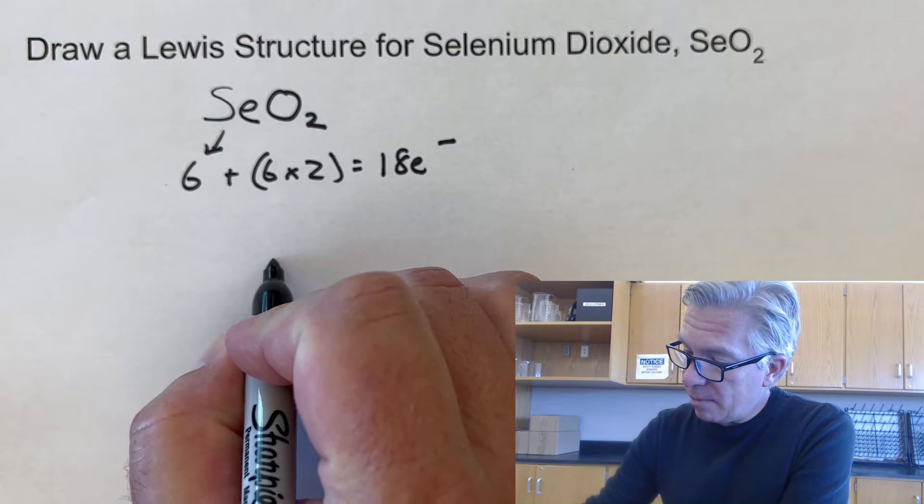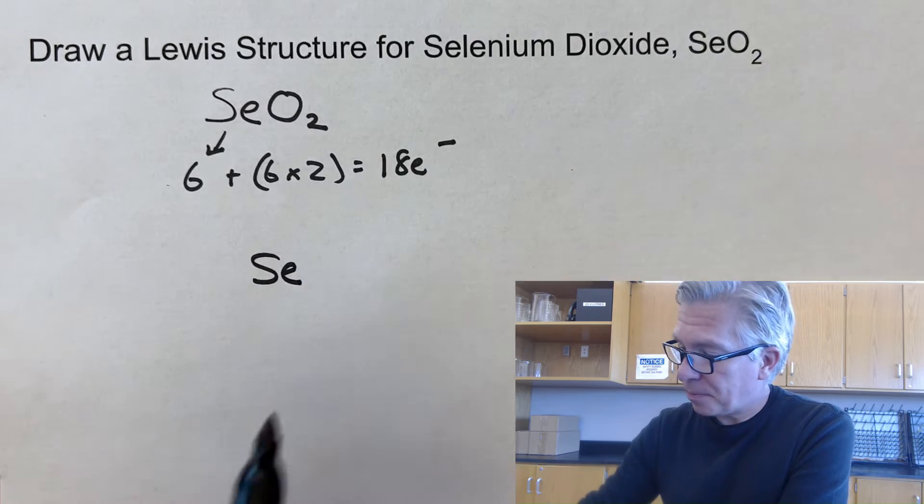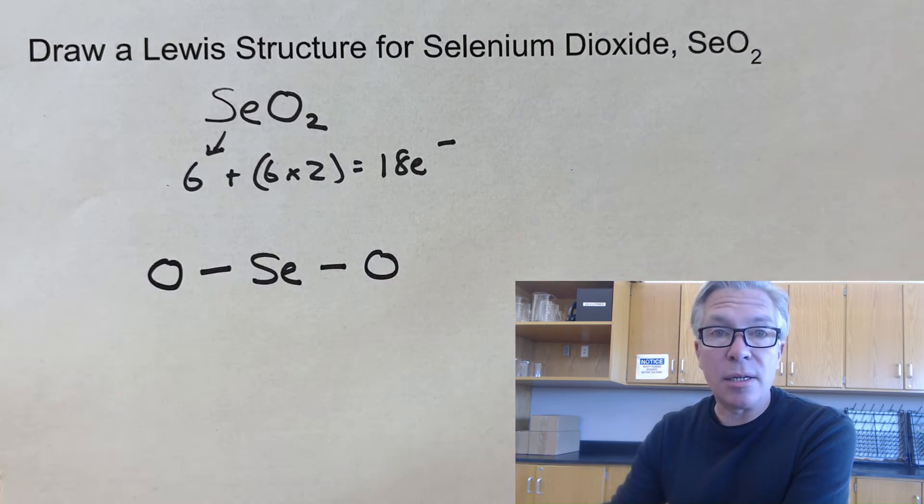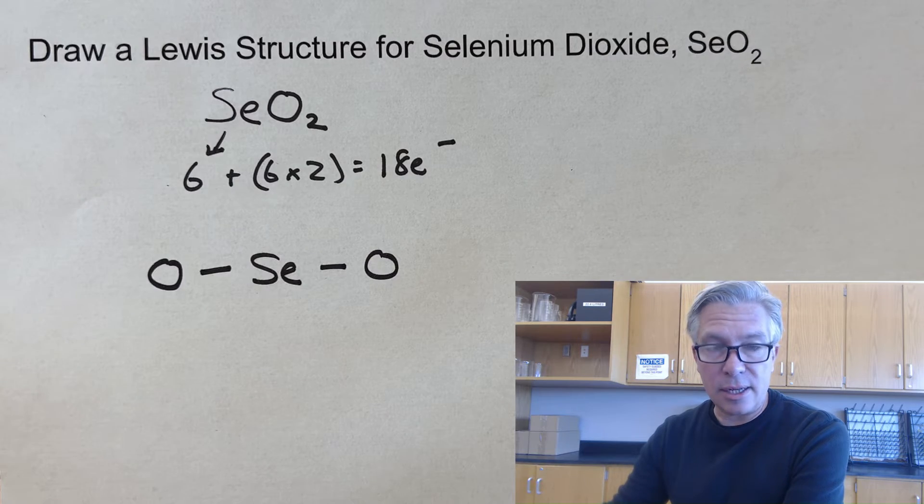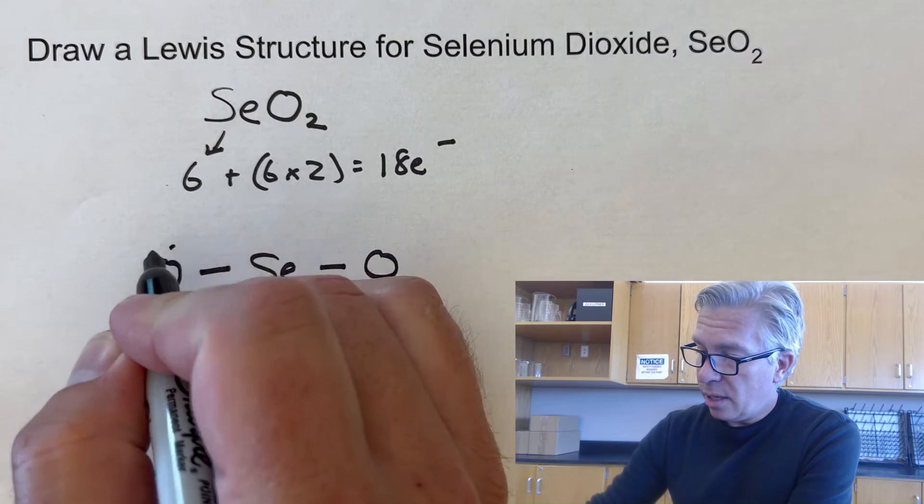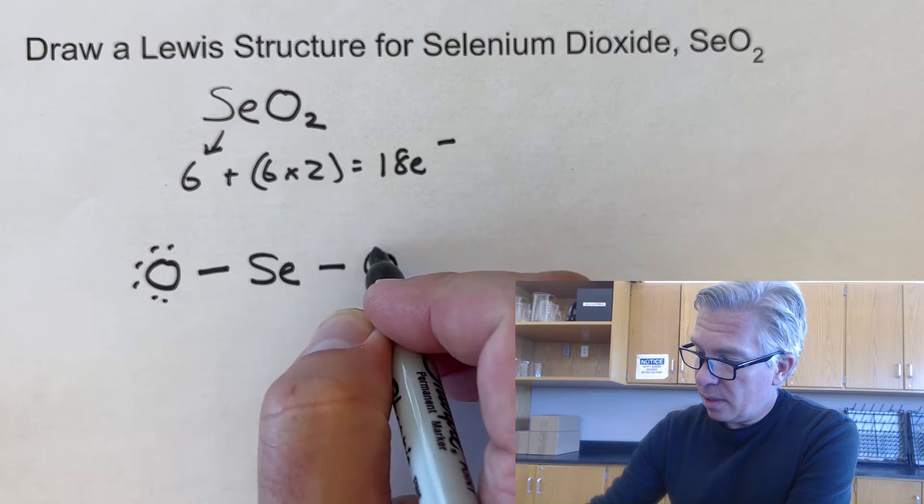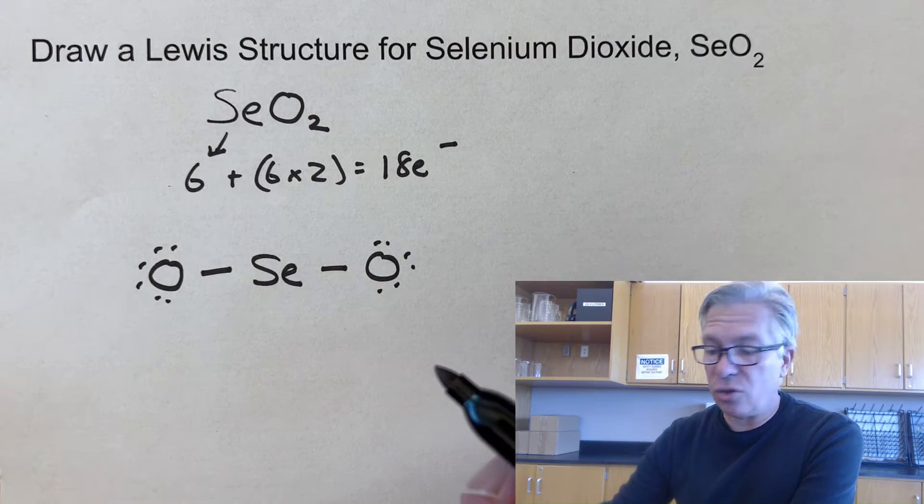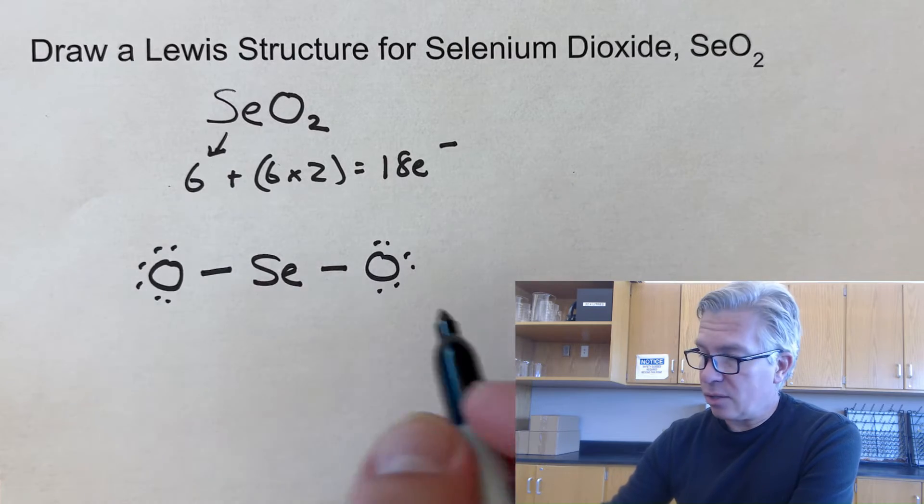And so we're going to go ahead and put the selenium in the middle and put a couple of oxygens on it with a single bond to start. That's the second step, draw the skeleton structure. Then we're going to add some dots around the oxygen so that they have an octet of electrons. And I've used up 16 electrons now.